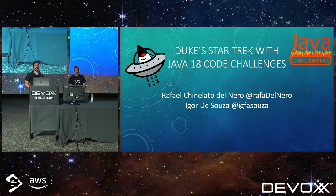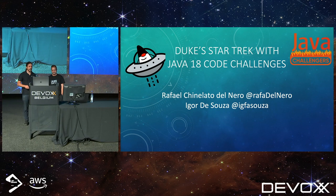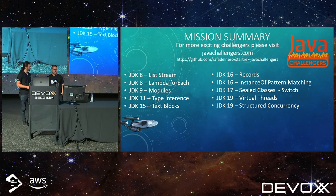Hello everyone. I'm Rafael Del Nero. Very welcome to the Java Challenges talk. And this is my friend Igor. He has around 20 years of experience as a Java engineer, and he's also a specialist in Kafka and Raspberry Pi. So you're very welcome, Igor, to be here.